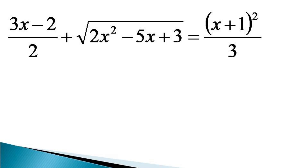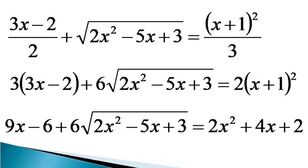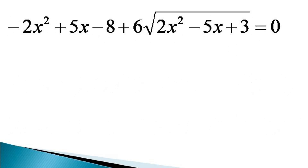In order to solve this equation, first we linearize the given equation by multiplying both sides by 6, and the equation becomes 3 into (3x minus 2) plus 6 into under root (2x² minus 5x plus 3) is equal to 2 into (x plus 1) whole square. Multiplying the parenthesis on the left hand side by 3 and expanding the square term on the right hand side, we get the equivalent equation as 9x minus 6 plus 6 under root (2x² minus 5x plus 3) is equal to 2x² plus 4x plus 2. Bringing all terms to the left hand side results in: minus 2x² plus 5x minus 8 plus 6 under root (2x² minus 5x plus 3) is equal to 0.